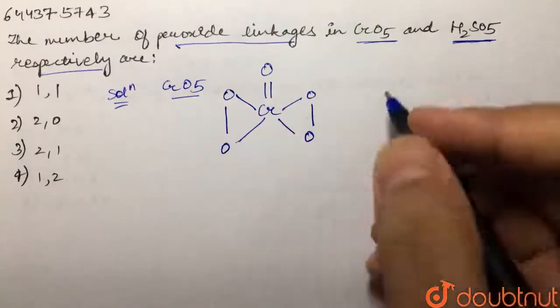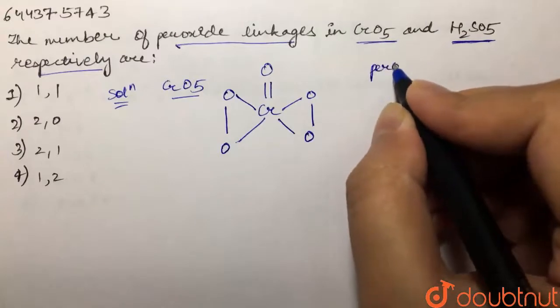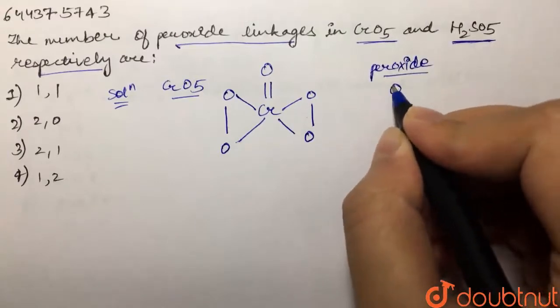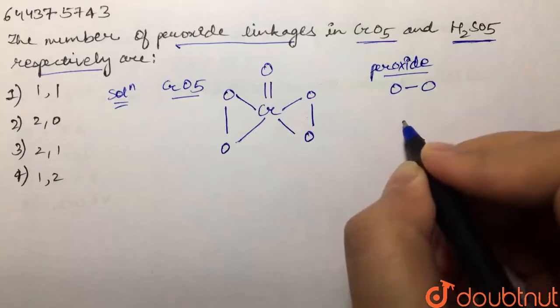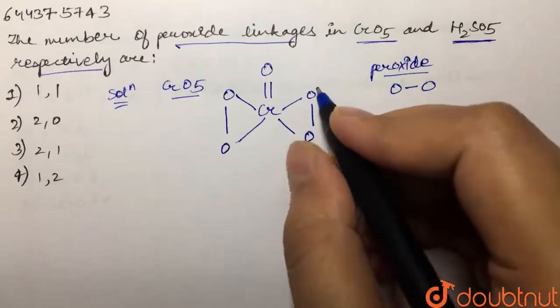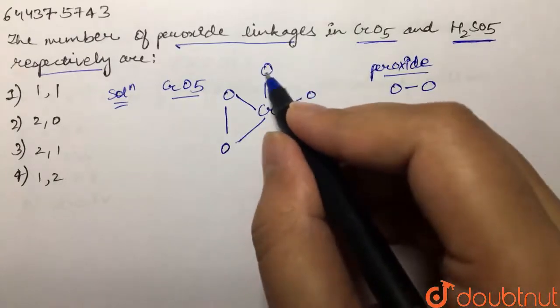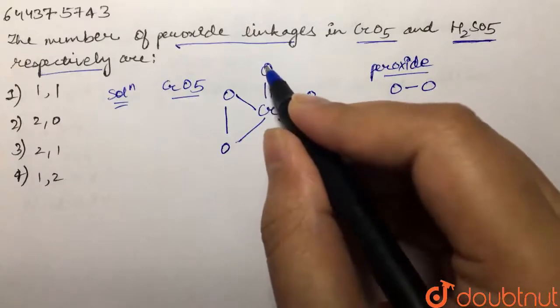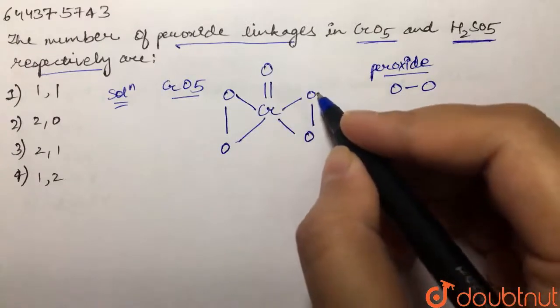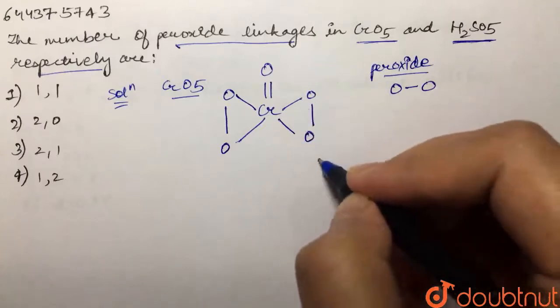Now what are peroxide linkages? Peroxide linkages are always oxygen single bond oxygen. So if we look over here, we have chromium bonded to double bond oxygen. Now oxygen single bond oxygen is this peroxide linkage.